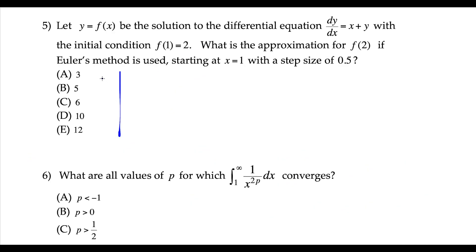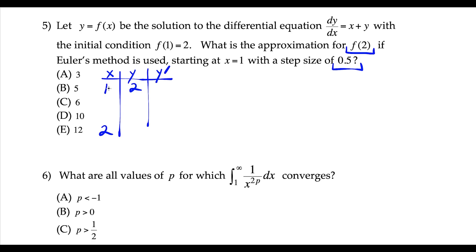Next up, we have Euler's method. For these questions you just have to be very organized — make a chart with x, y, and y-prime (also known as dy/dx). We start with the point (1, 2) and we're trying to approximate f of 2. We take a step size of 0.5. So 1 plus 0.5 is 1.5, and another 0.5 brings us to 2. We're doing two steps here.